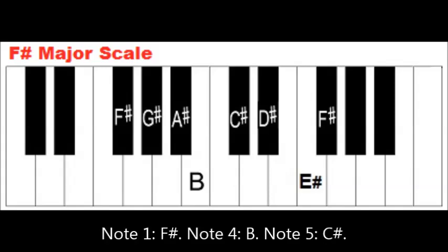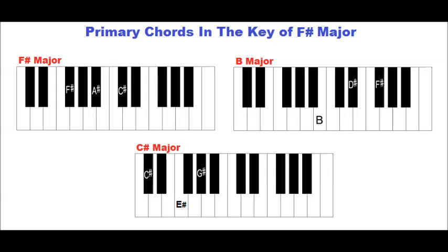Notes 1, 4, and 5 are F-sharp, B, and C-sharp. Therefore, the primary chords in the key of F-sharp major are F-sharp major, B major, and C-sharp major.